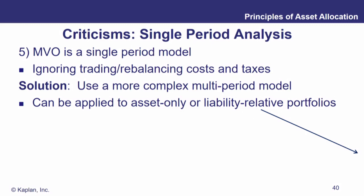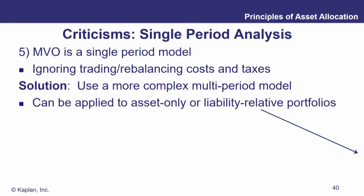More criticisms of mean variance optimization: it's a single period model. We generally think of portfolio management as a repeated process occurring over a series of years. As time goes by, the circumstances, the data, the assumptions, all the different parameters we're looking at can change. We're ignoring things like trading, rebalancing costs, taxes, and all those other things. That's certainly a criticism.